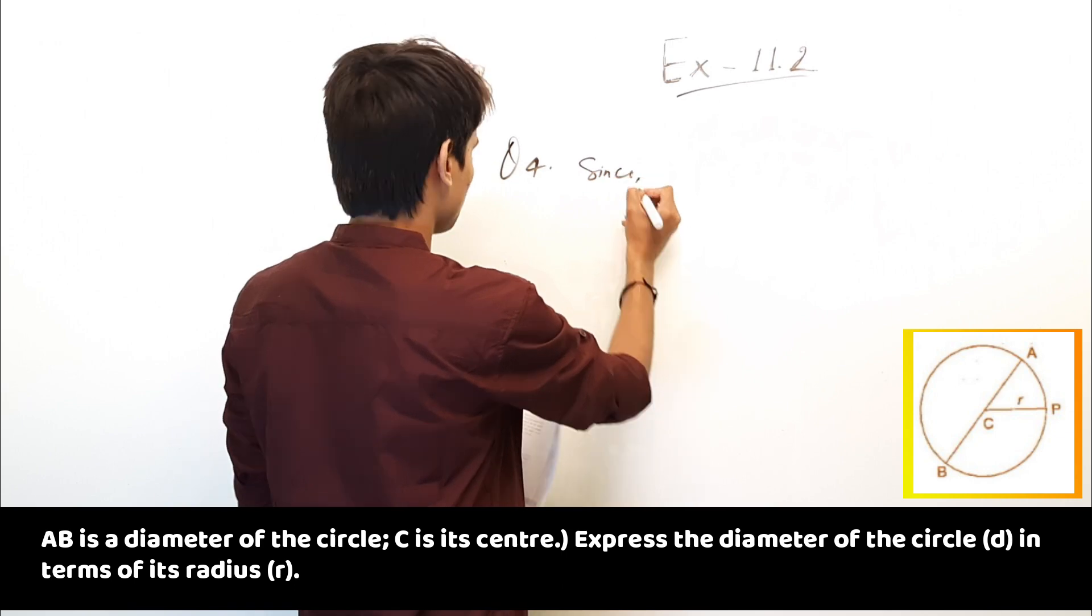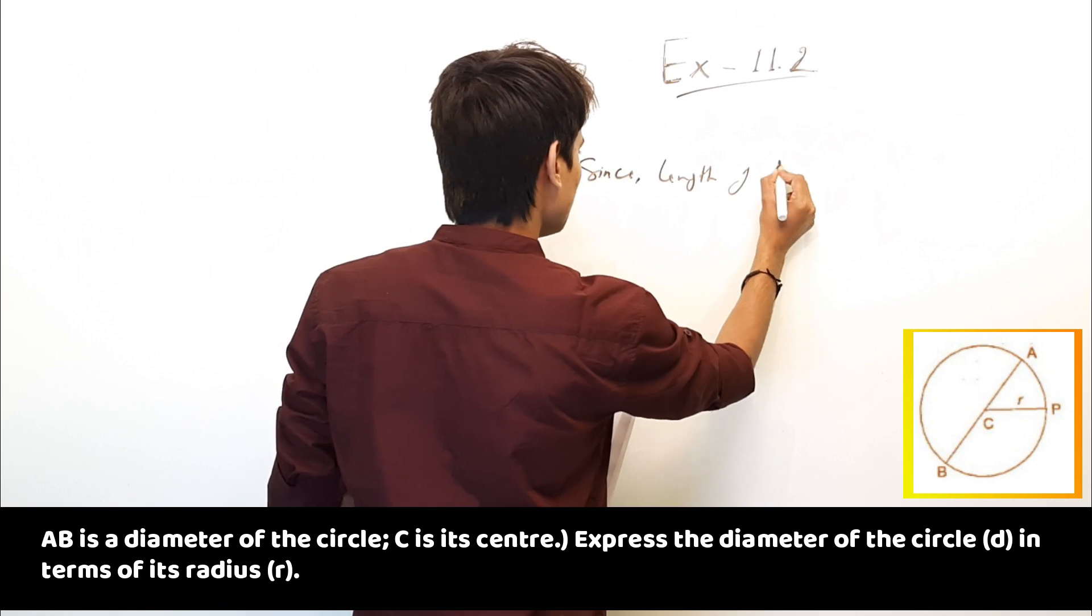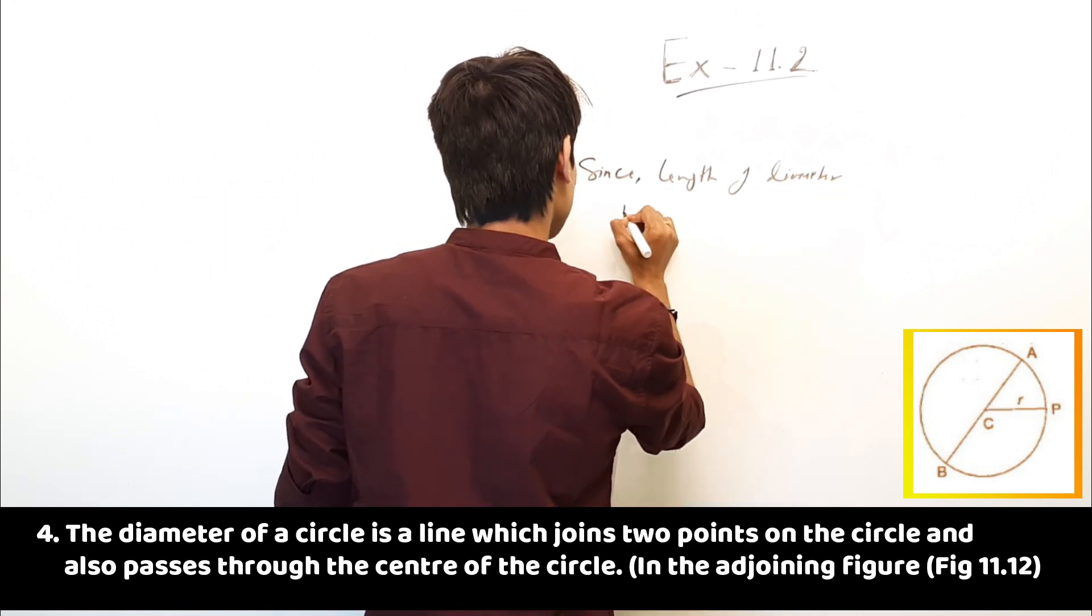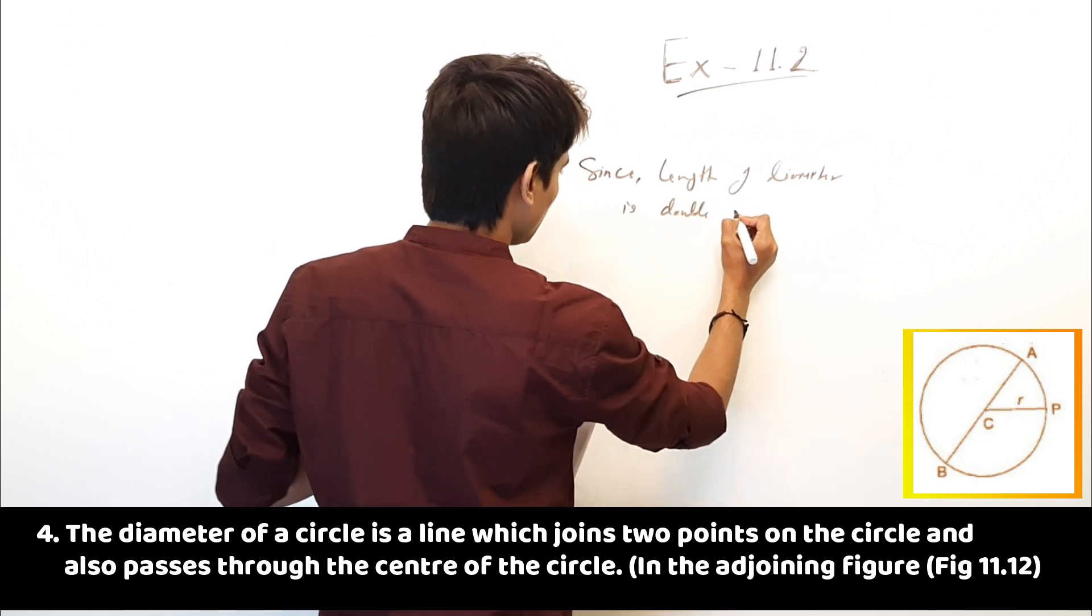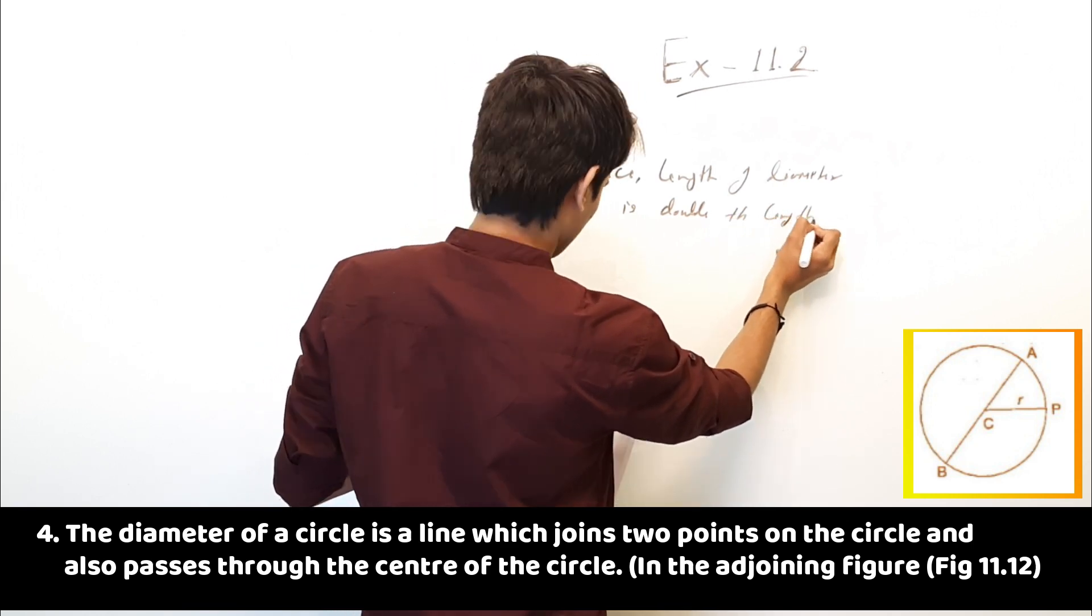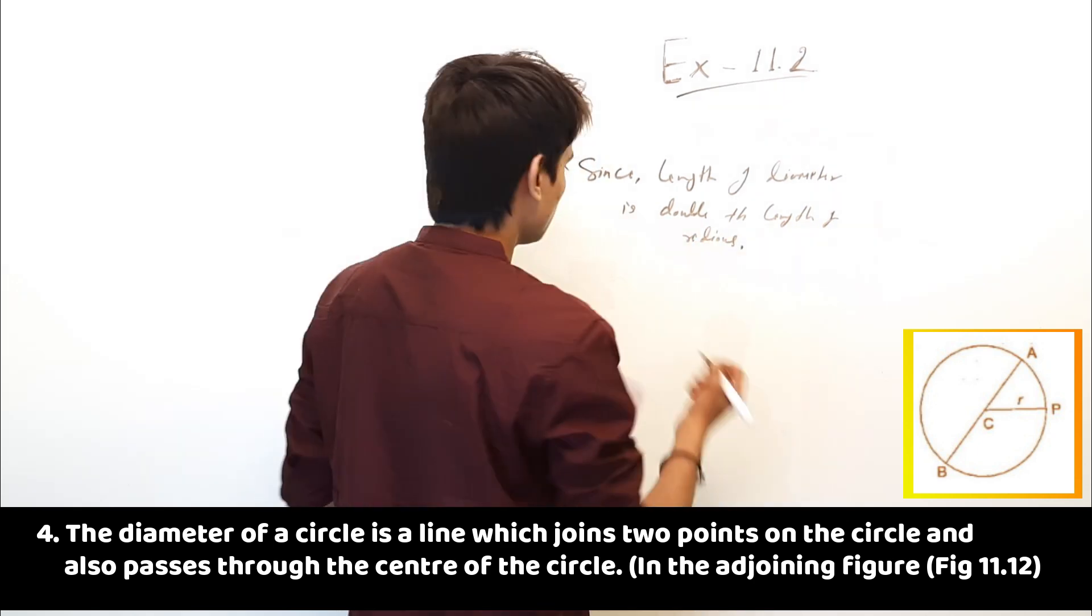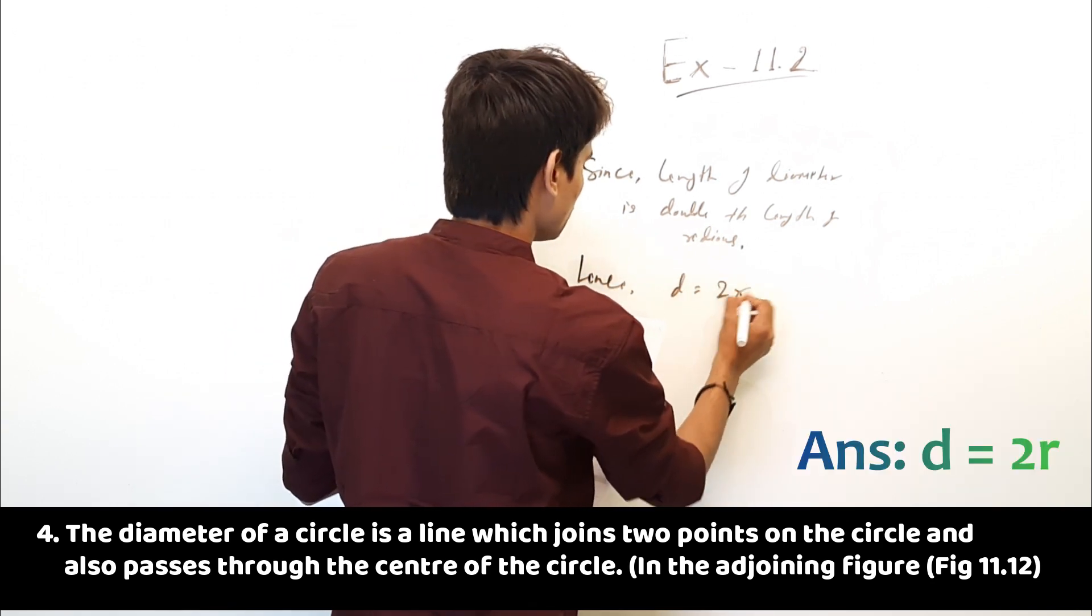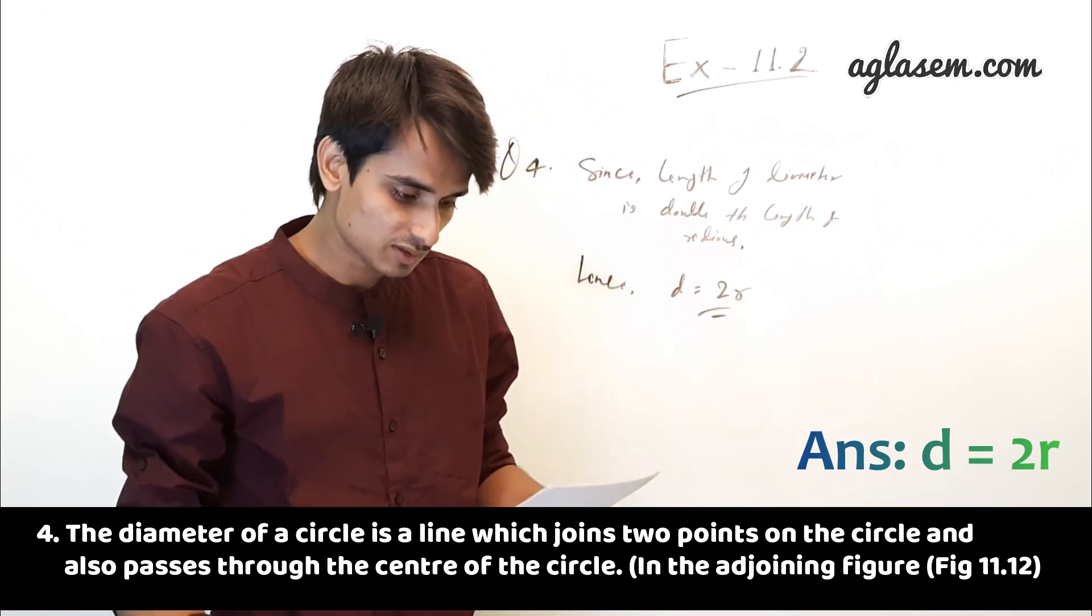So let's start. Since length of diameter is double the length of radius, hence D is equal to 2R. So this is the answer.